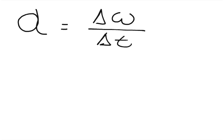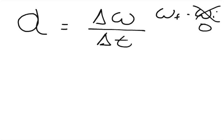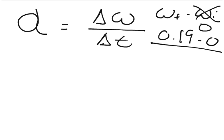The change in angular speed is omega final minus omega initial. It tells us the wheel starts from rest, so the initial angular speed is zero, and the final angular speed is 0.19 revolutions per second. The time given is 29 seconds. We just need to remember the speed is in revolutions.